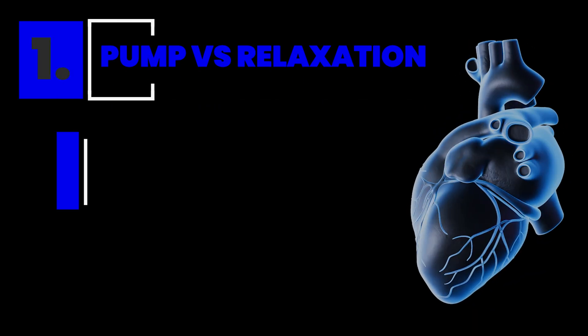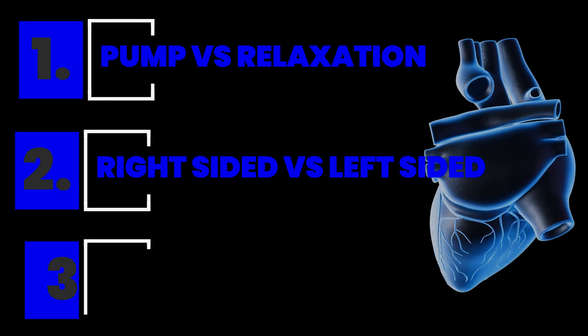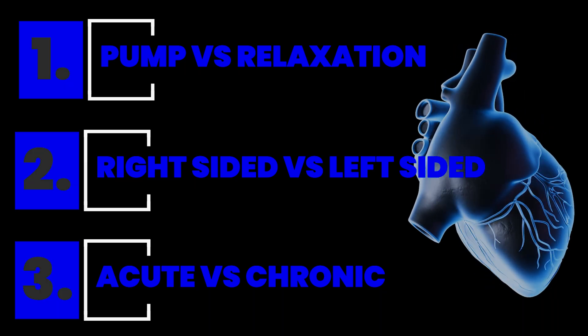Even though there are three categories, they are not mutually exclusive — a person can have any number of those types of heart failure. When describing heart failure, you should be able to describe at least one aspect of each of those categories. For example, you can have right-sided heart failure that is systolic and chronic, or a left-sided heart failure with reduced ejection fraction that is acute. It's helpful to describe each aspect to be more specific and have a better dialogue with your physician.